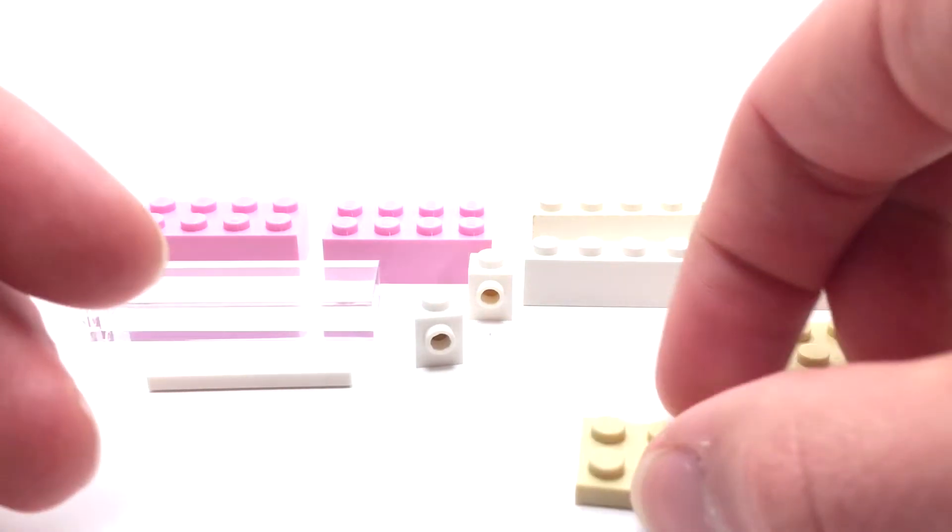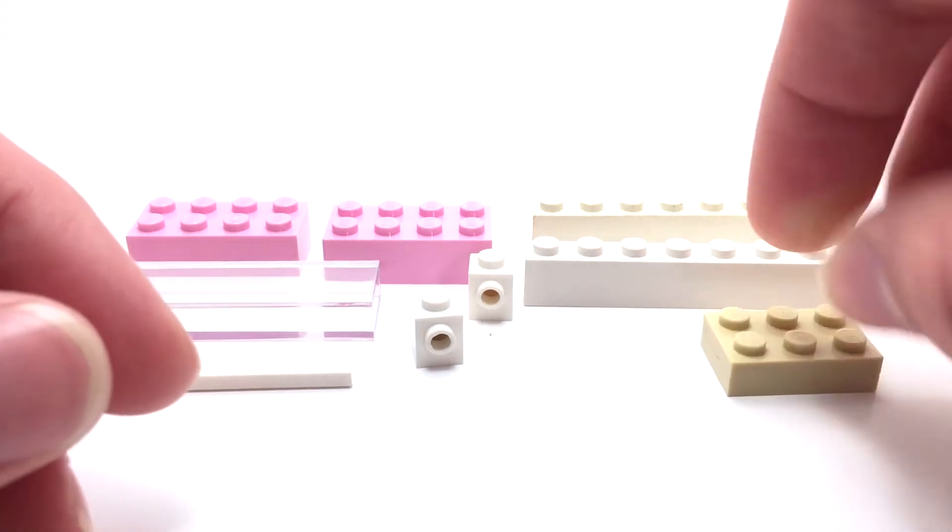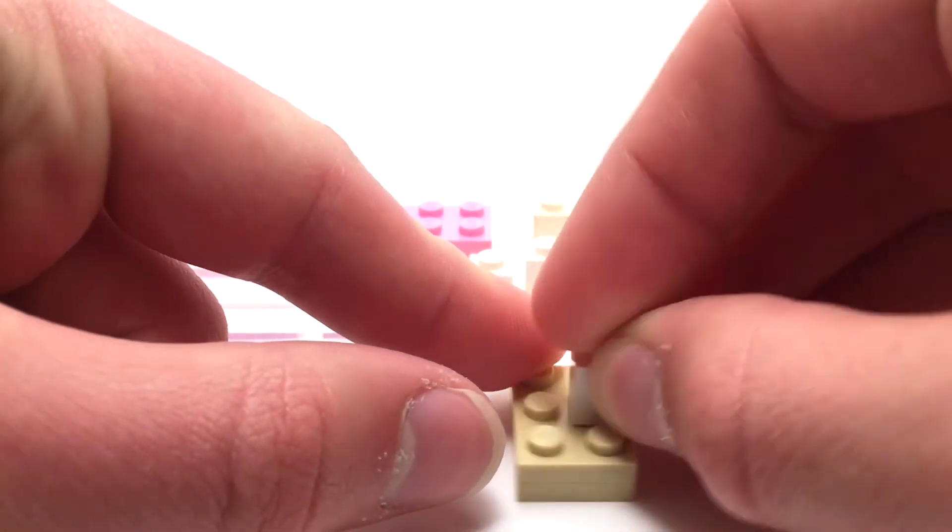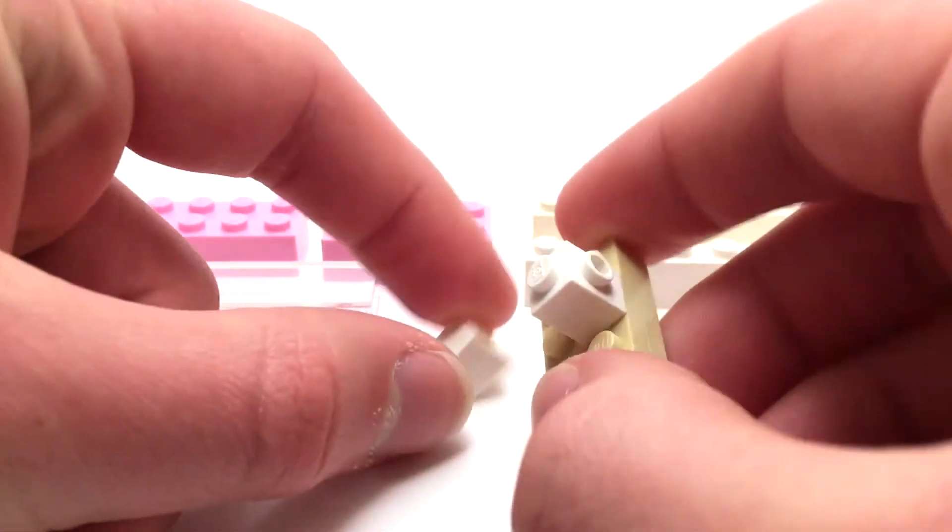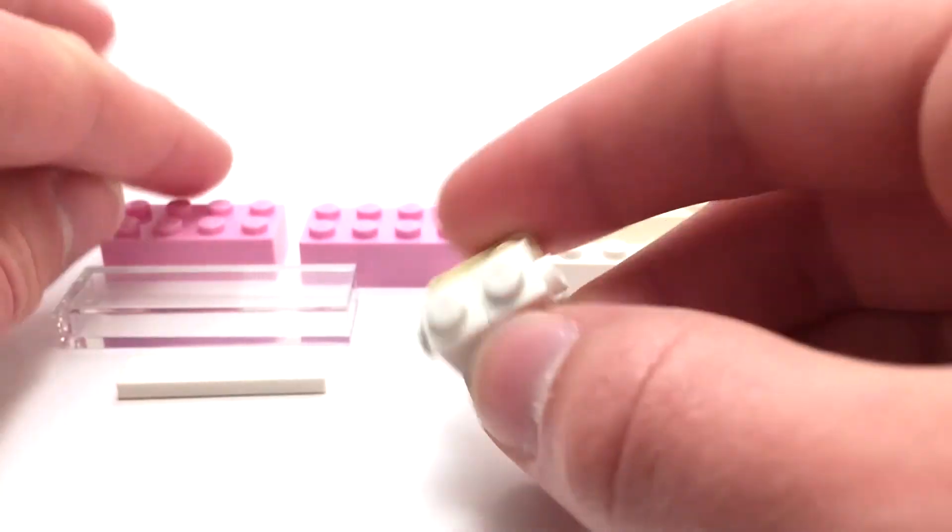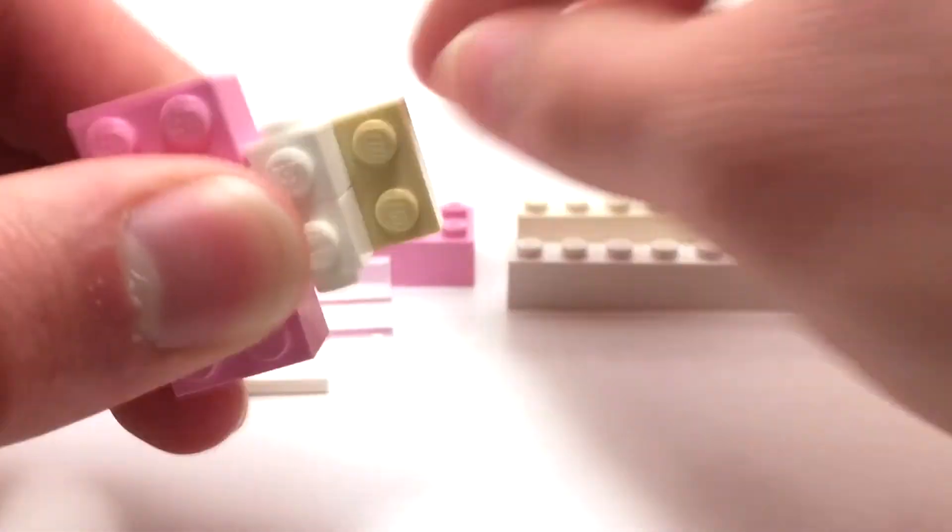Alright, so building up this mirror we first stack these two one by two by three plates, then onto them we have these two one by ones with a stud on each side, and then these two two by four pink bricks. Now this here is the floor.